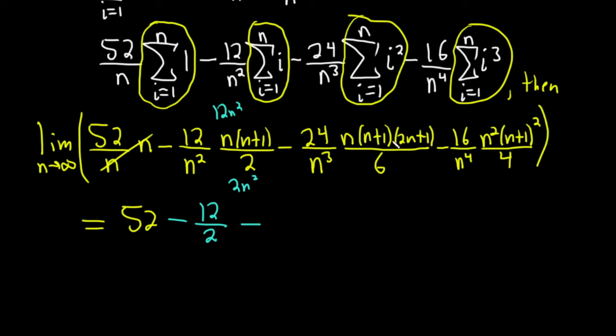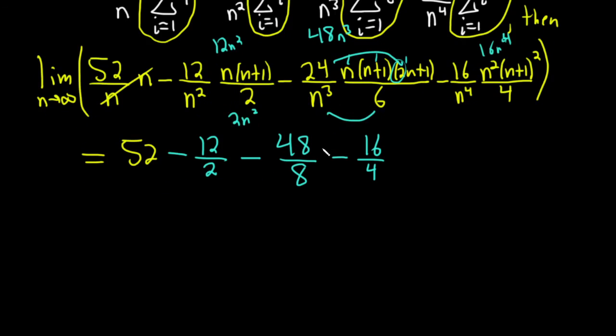Minus 12 over 2. Here it's 24nn, so n cubed, but it's 24 times 2, so 48n cubed. And on the bottom it's 6n cubed. So it's 48 over 8. You got to be really careful there. Very common that people mess up. And then minus, this is 16, this is also squared, so 16n to the 4th over 4n to the 4th. So it'll just be 16 over 4.